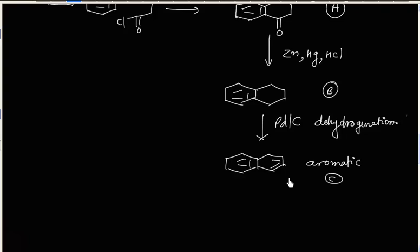In this tutorial we discussed Friedel-Crafts acylation: first you generate an acylium ion, then you do electrophilic aromatic substitution. Friedel-Crafts acylation has no rearrangement, and you can prepare side-chain alkylbenzenes by using Clemmensen reduction or Wolff-Kishner reduction, both of which convert a C=O group to a CH2 group.